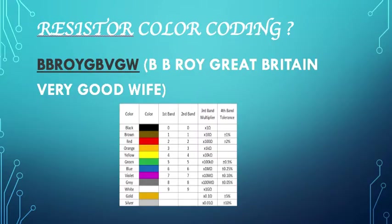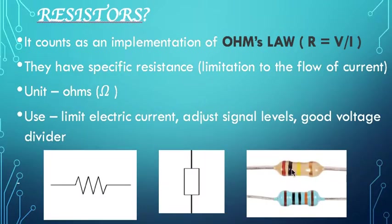And as per this value of gold, we call it as a tolerance band. Gold and silver fall under the tolerance category. If it's gold, we write it as plus minus 5%. Then the value of the resistor becomes 100 kilo ohm plus minus 5%. Means the value can either go up or down by 5%. That's perfectly fine.